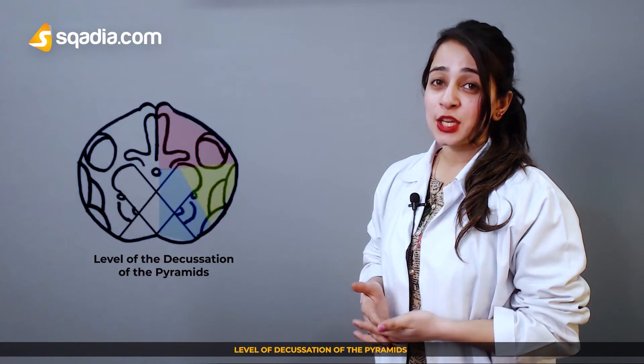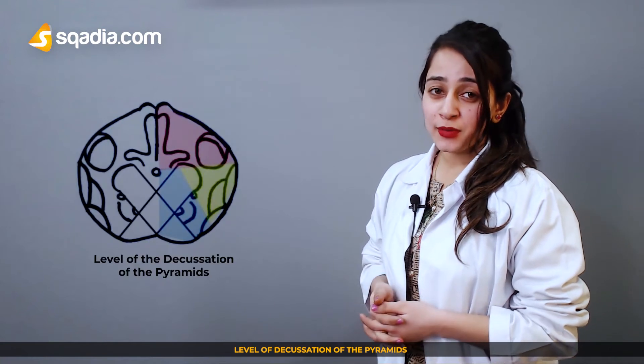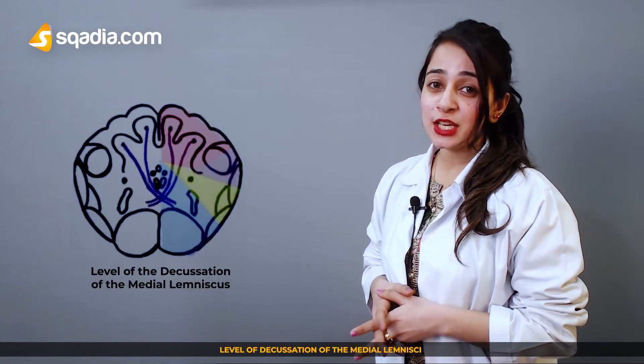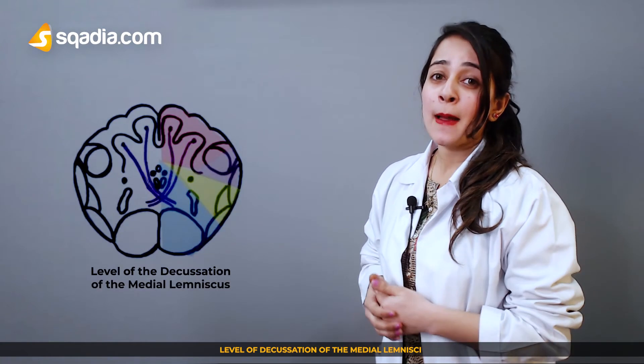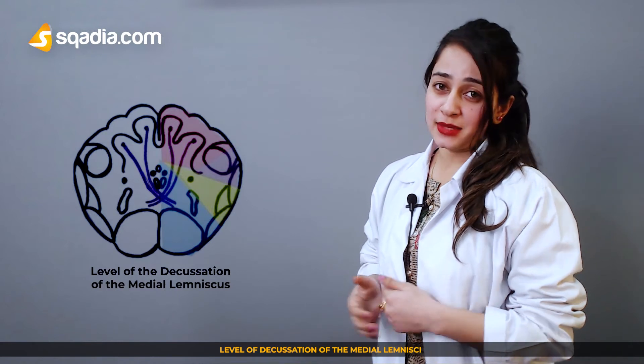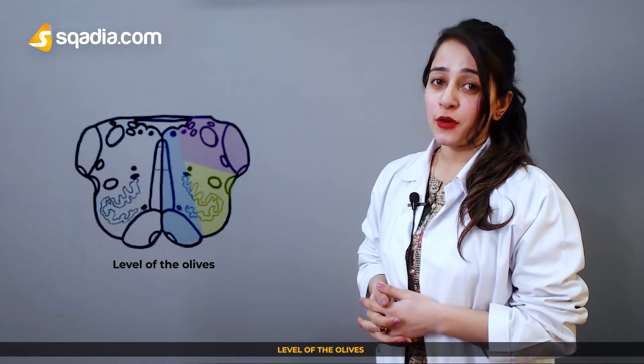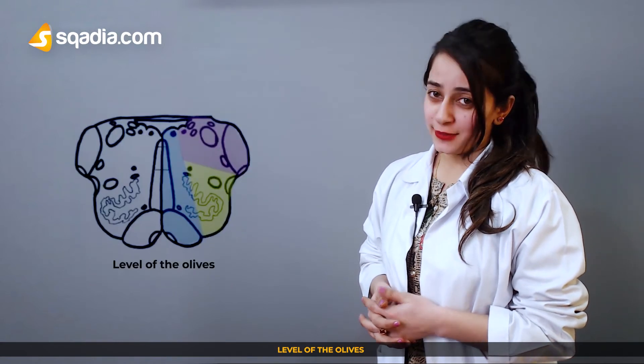Three levels of the medulla are typically discussed: the level of decussation of the pyramids, the level of decussation of the medial lemnisci, and the level of the olives.